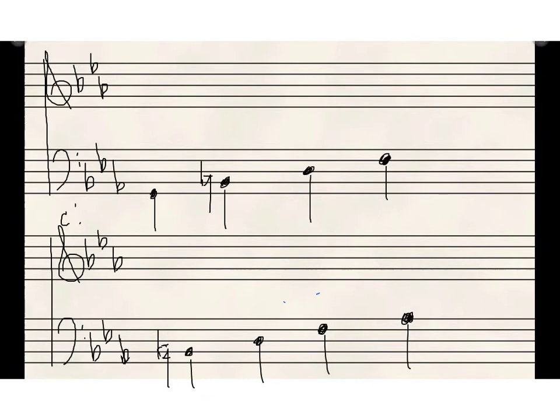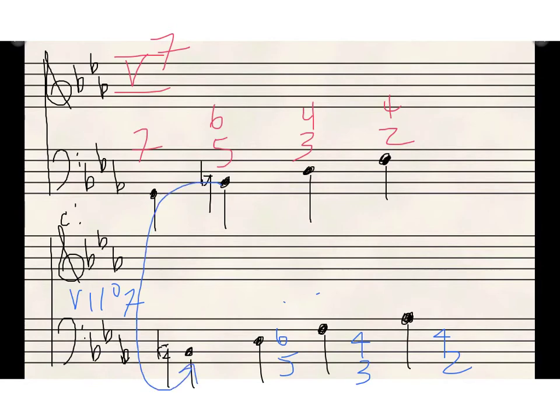Let's advance to the next slide. In this slide, I've written out the V7 chord in all its inversions. Here's the 7, the 6/5, the 4/3, and the 4/2, as well as the vii°7 in all of its inversions. So here is the 7, the 6/5, the 4/3, and the 4/2. And you can see that the bass notes are shared between V6/5 and vii°7 fully diminished 7, between V4/3 and vii°6/5, and between V4/2 and vii°4/3.